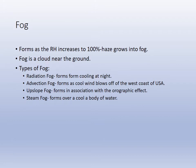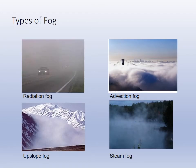Fog is when a cloud forms on the ground. Some fog is radiation fog, forming at night. Advection fog is a cool wind blowing off the west coast over the cool California Current — when it hits land it warms up. Upslope fog is associated with the orographic effect, and steam fog occurs when water pooled over a lake or pond causes condensation in the morning.